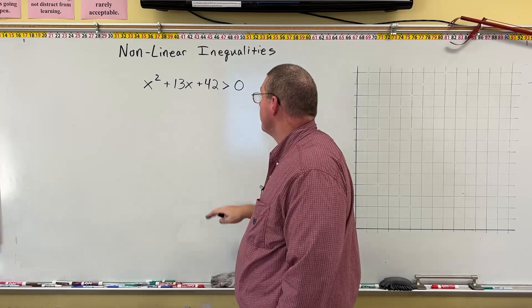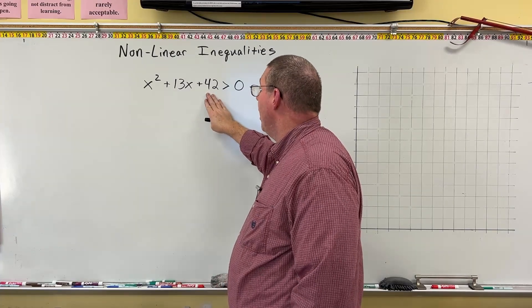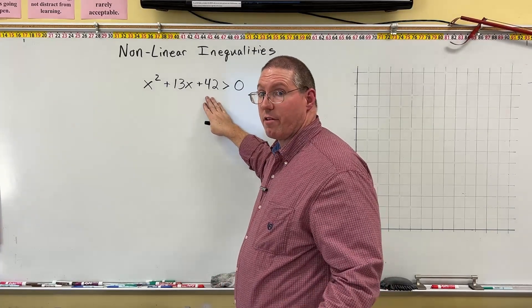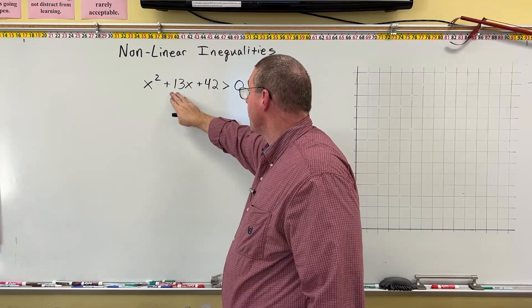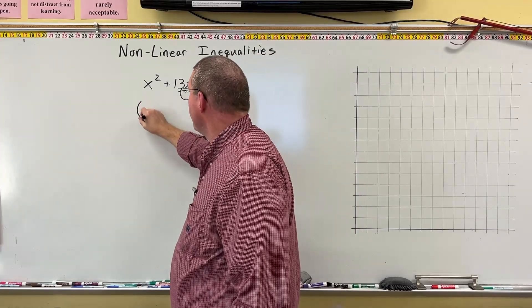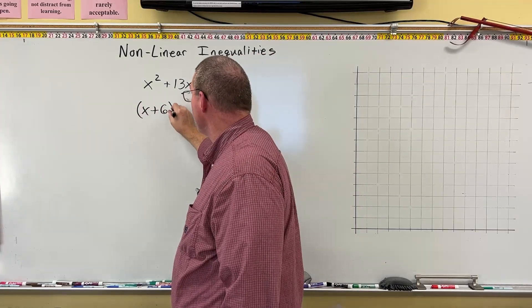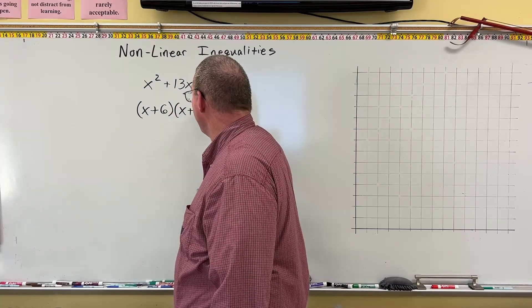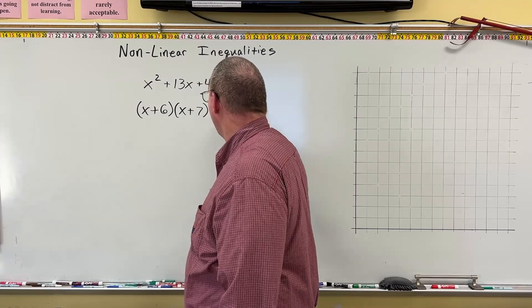I'm looking for two numbers that multiply to 42. I'm thinking 6 and 7, because 6 times 7 is 42, and 6 plus 7 is 13, so that's good. So this becomes x plus 6 times x plus 7 is greater than zero.